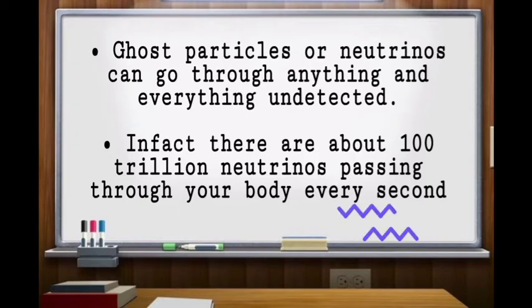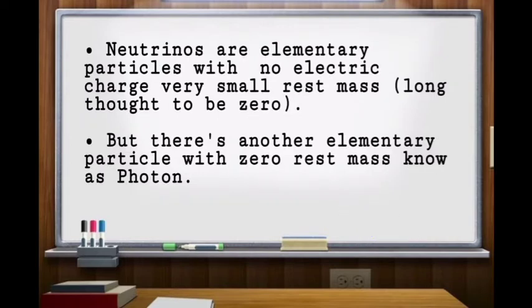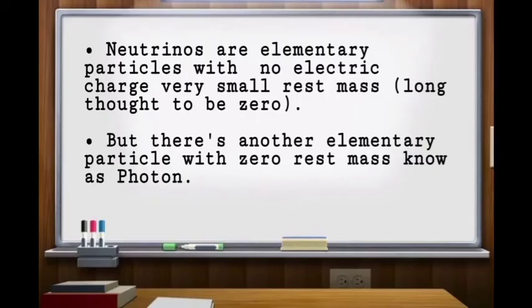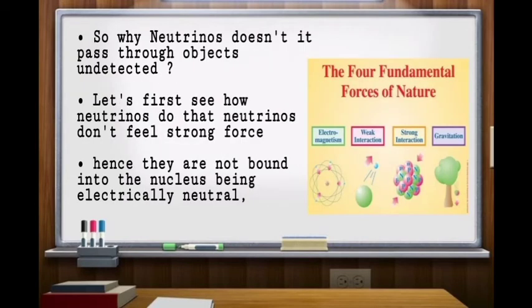Neutrinos are elementary particles with a very small rest mass and no electric charge. I say no electric charge, but hence another elementary particle with zero rest mass known as photon. So why neutrinos doesn't it pass through objects undetected?